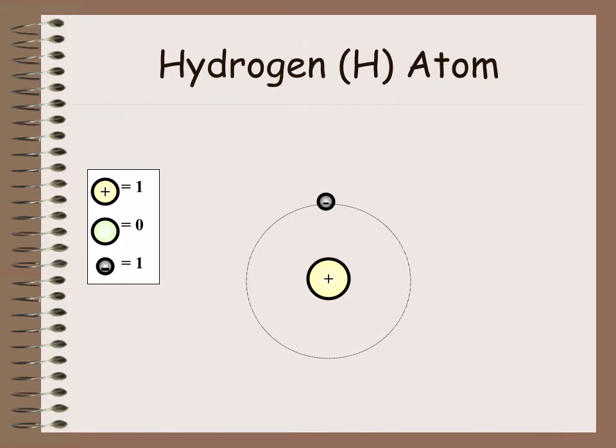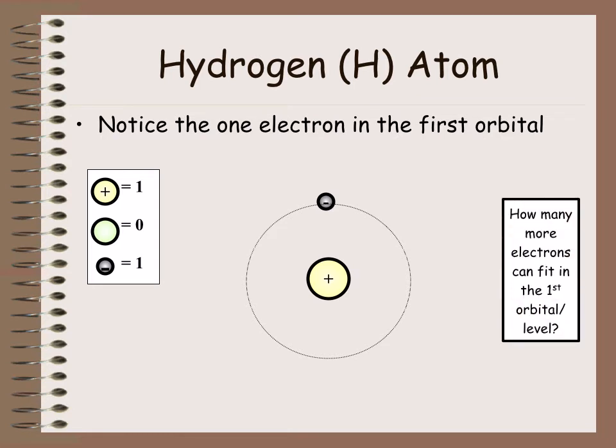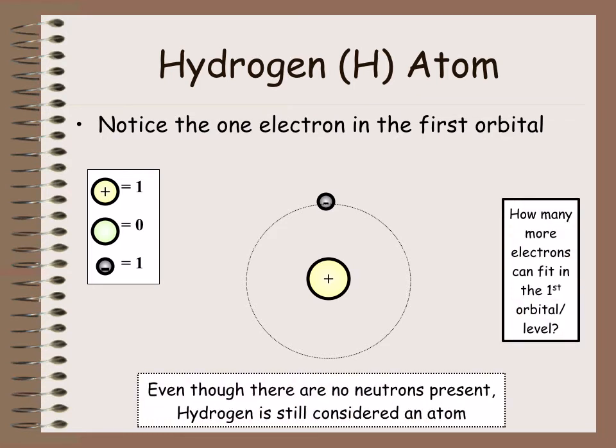So let's see an example. Hydrogen is number one on the periodic table. That means it has one proton. And because it has one proton, it has one electron. It actually has zero neutrons, and we'll get how to figure that out a couple slides from now. So there's one electron in the first orbital. You can only fit one more electron in the next orbital. And then hydrogen is still an atom, even though it does not have a neutron.